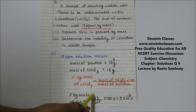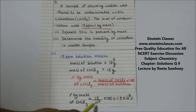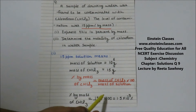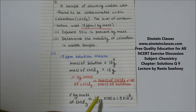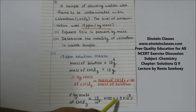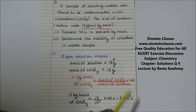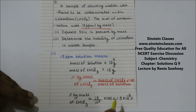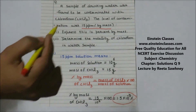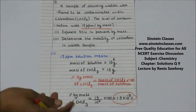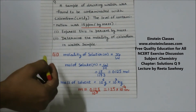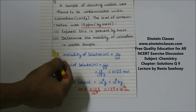So percentage by mass of chloroform = (15 / 10^6) × 100, which gives us 1.5 × 10^-3 percent. This is the percentage by mass of chloroform.